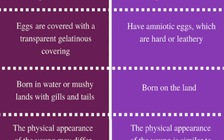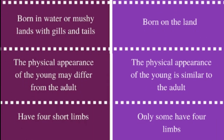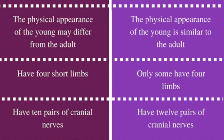Amphibians are born in water or marshy lands with gills and tails, while reptiles are born on land. The physical appearance of young amphibians may differ from the adult, while the physical appearance of young reptiles is similar to the adult.